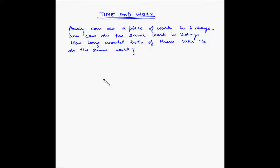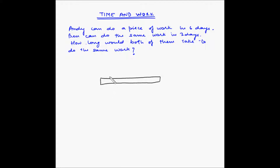Welcome to this example on time and work. Andy can do a piece of work in six days. Ben can do the same work in three days. How long would both of them take to do the same work? Let's consider a situation where you have a log of wood in your yard that you want to get painted — this is the piece of work that needs to be done. You reach out to a contractor named Andy and ask how much time he will take to paint it.